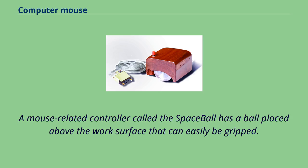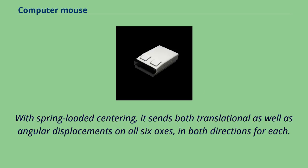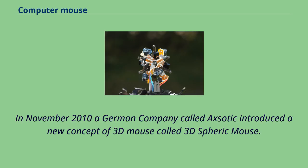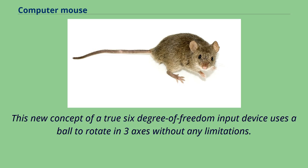A mouse-related controller called the Spaceball has a ball placed above the work surface that can easily be gripped. With spring-loaded centering, it sends both translational and angular displacements on all six axes in both directions. In November 2010, a German company called Exotic introduced a new concept of 3D mouse called the 3D Spheric Mouse, a true six-degree-of-freedom input device that uses a ball to rotate in three axes without any limitations.